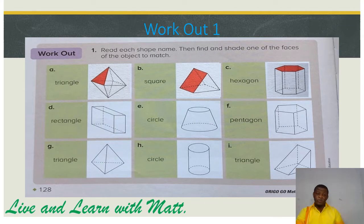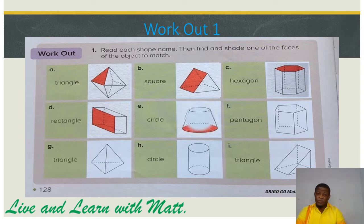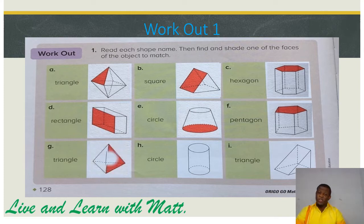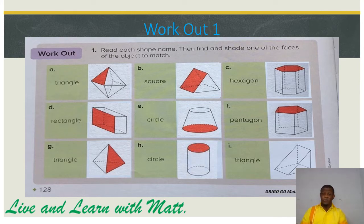Part D — rectangle. Two opposite sides. So we are going to shade this rectangle side. Part E — circle. Part F — pentagon. Pentagon. Five sides. So we are going to shade this. Part G — triangle. So we are going to shade the side that is a triangle. Part H — circle. And part I — triangle. We are going to shade that.